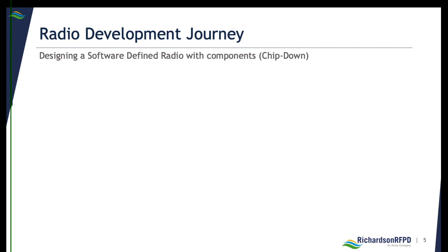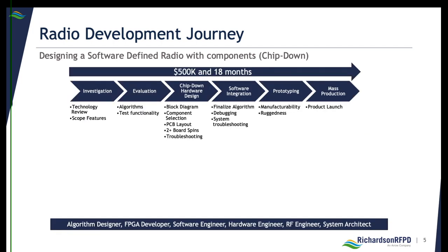Now let's look at the process for bringing a radio to market. Our customers can take anywhere between 6 to 18 months to develop a radio and invest up to $500,000 for the most complex systems. Steps cover the gamut from investigation, PCB layout, multiple board spins, debugging, and manufacturability tests. It also takes a large team of developers to make this happen, from algorithm developers, FPGA developers, software engineers, RF engineers, etc.